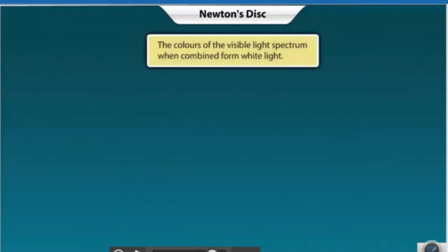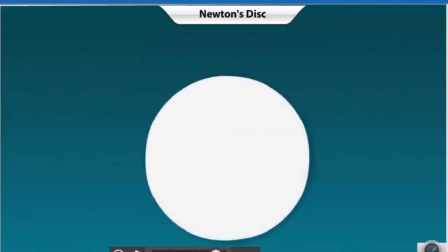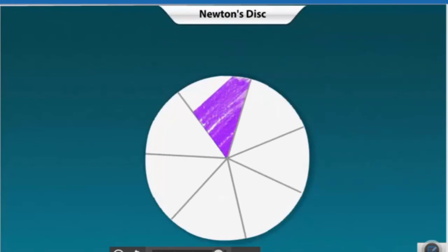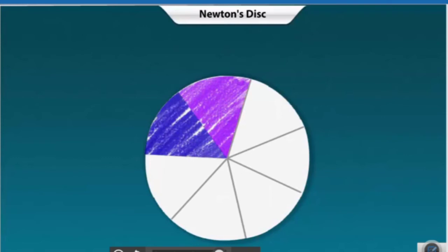The colors of the visible light spectrum when combined form white light. Let us prove this by doing a simple activity. Take a paper disc and draw seven sectors on it. Color each sector sequentially with the colors of the visible spectrum.